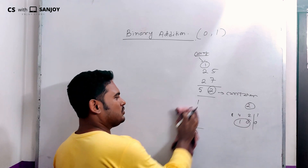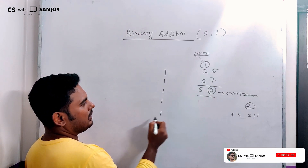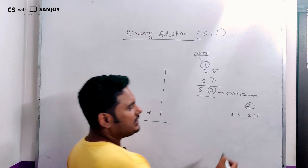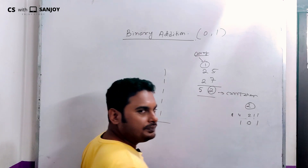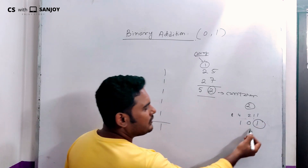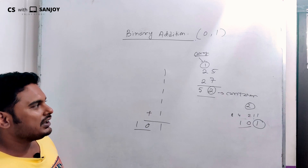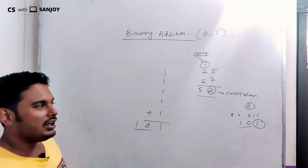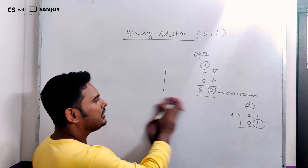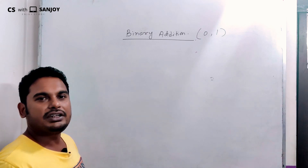Now let's see: we have 5 and 1. 5 in binary is 1 0 1. When we add, we get sum 1 and carry 1. This is how binary numbers work. We can add any binary number using these rules.